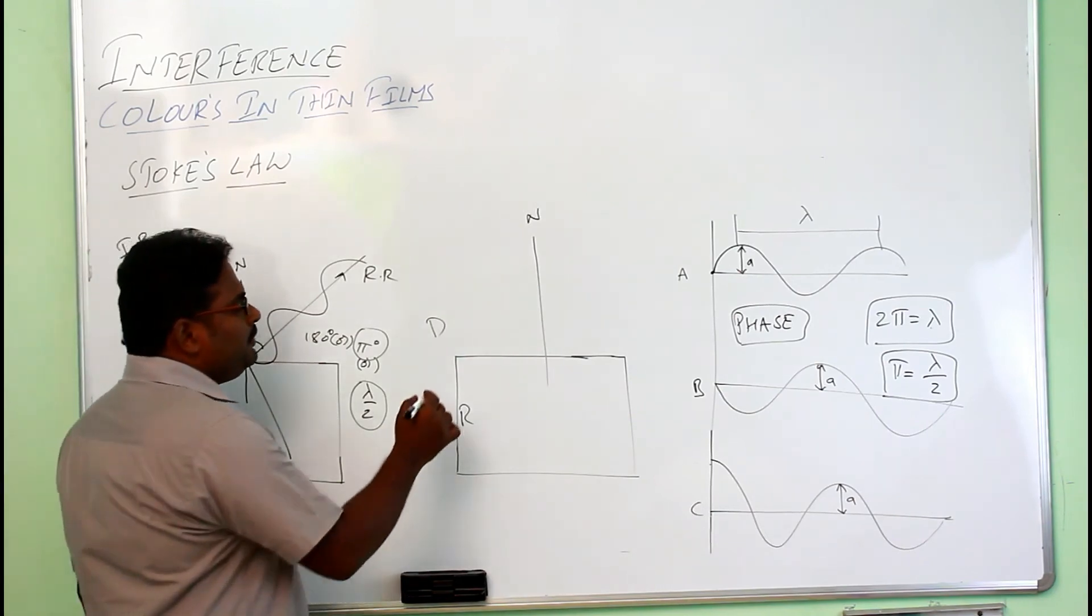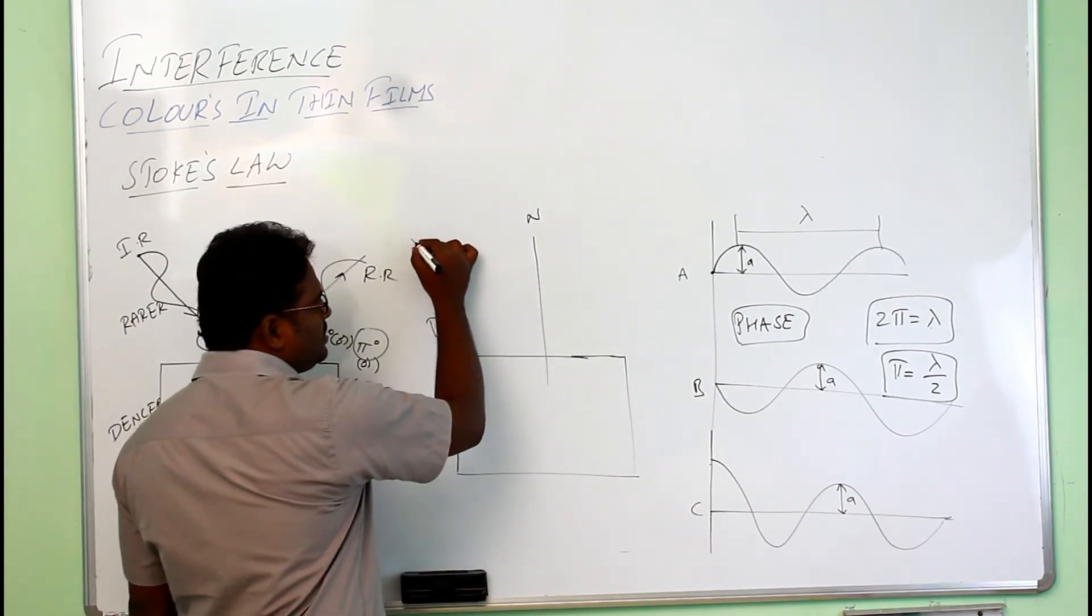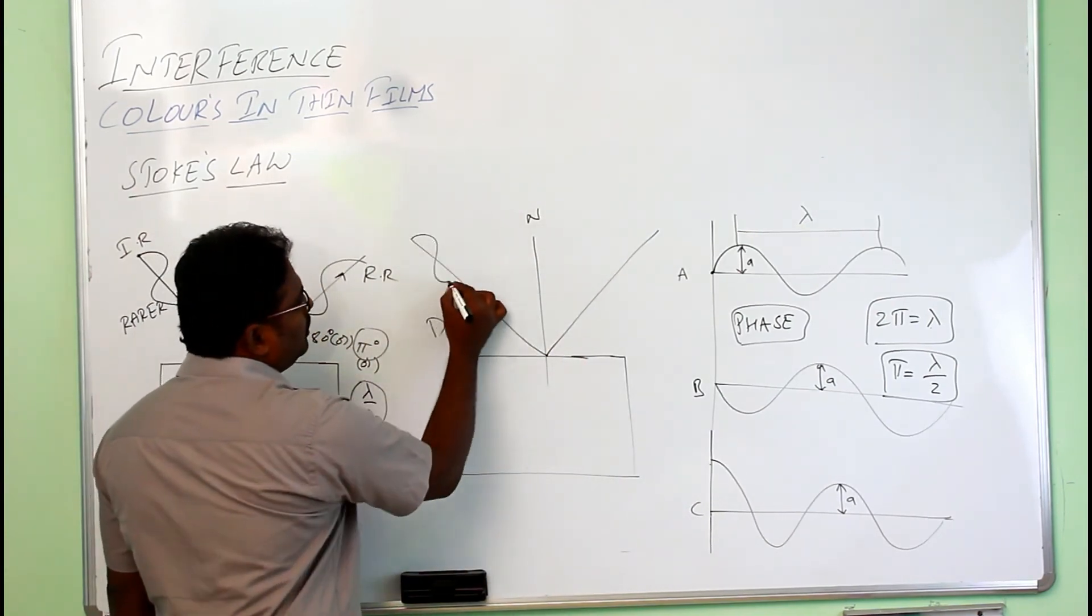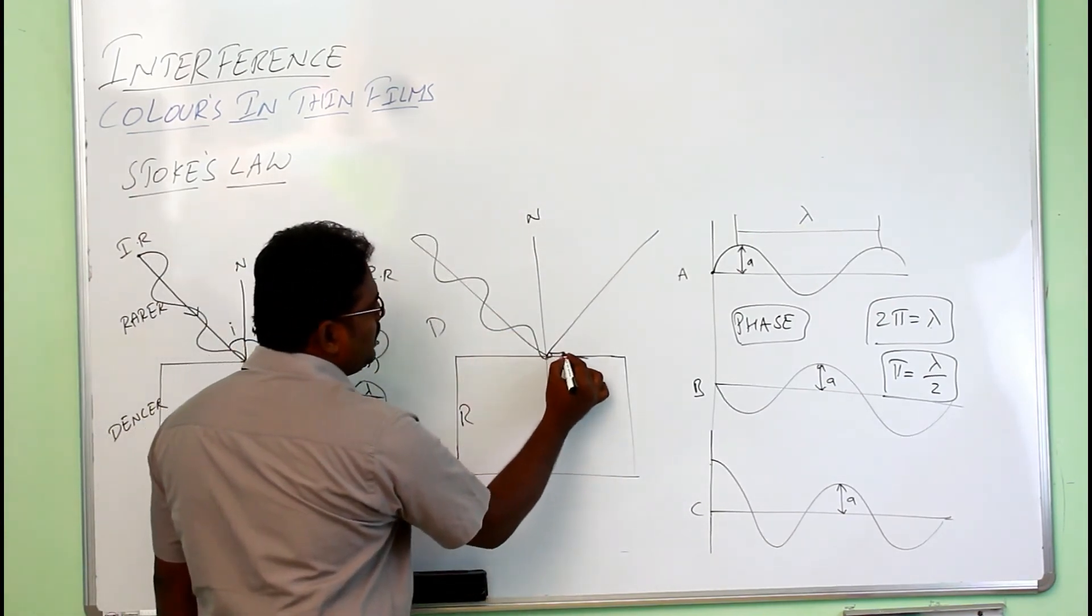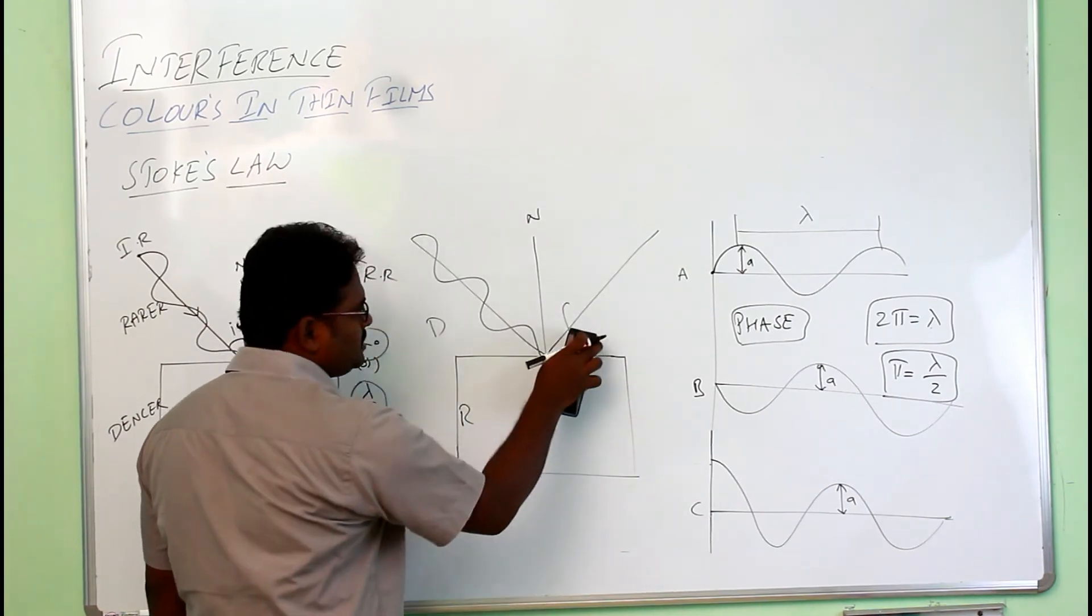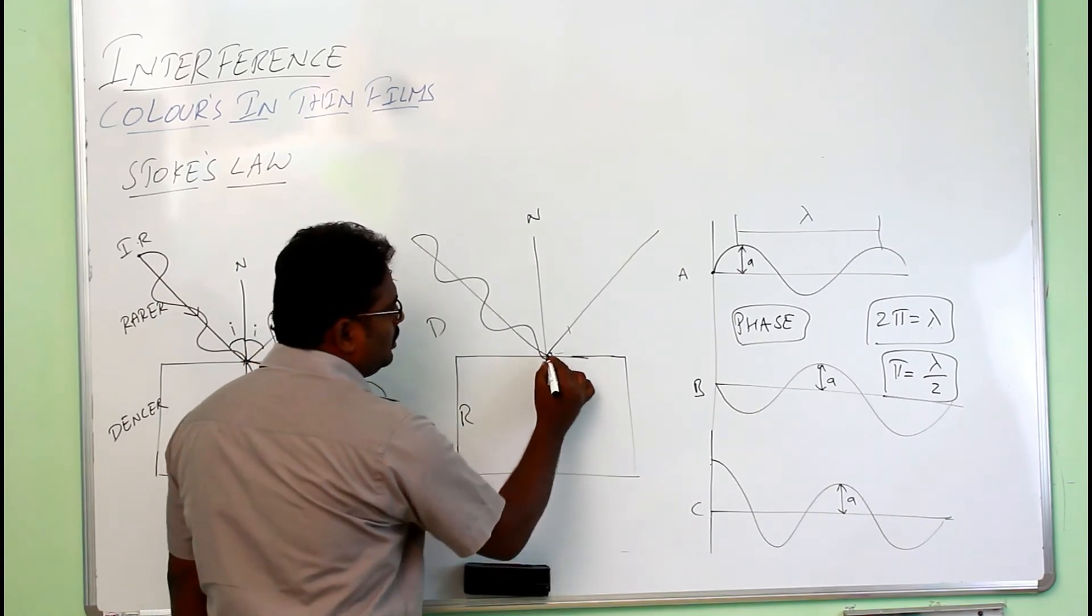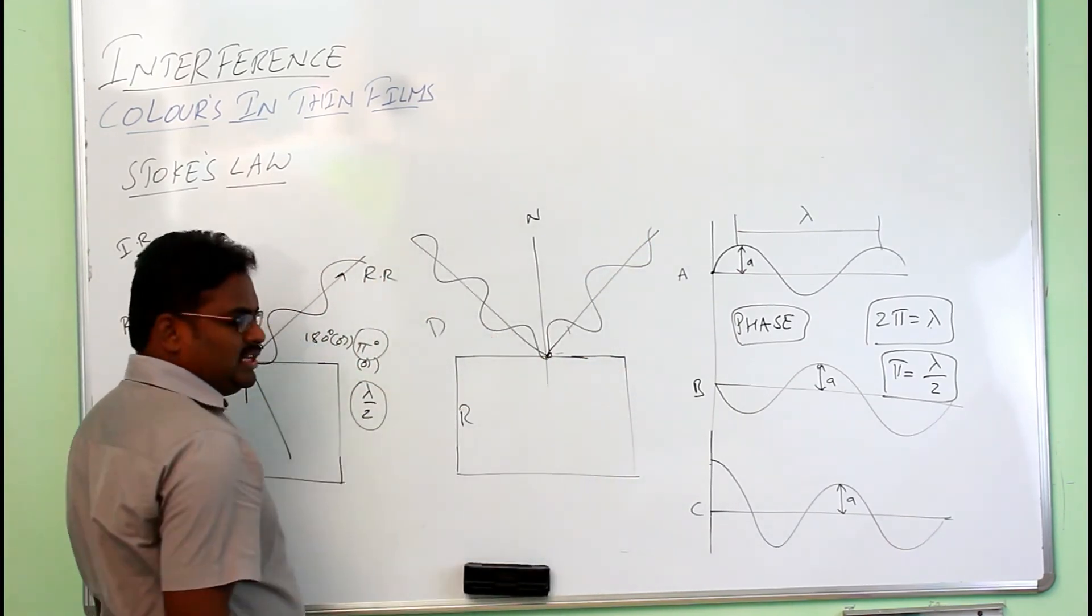But in the case of denser medium to rarer medium, that means, if a light ray is reflecting from the surface of a rarer medium, there is no phase change and there is no path difference. That means, there is no phase change.